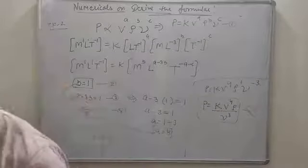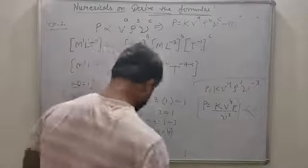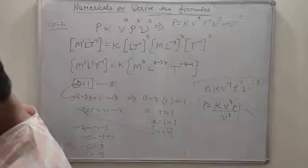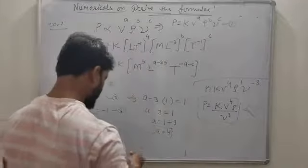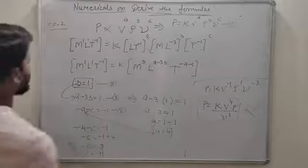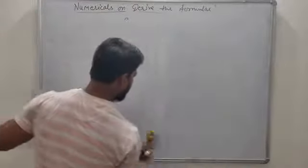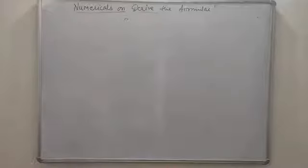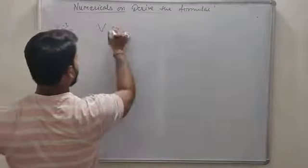इस तरीके से आप हर एक numerical को solve कर सकते हो। चलिए मैं एक और करवाता हूँ। Next numerical इस तरीके का है — velocity of a string। Velocity किसी भी type की हो — escape velocity, orbital velocity, relative velocity, transverse wave की velocity — सबका dimensional formula same रहेगा।